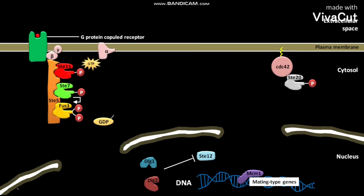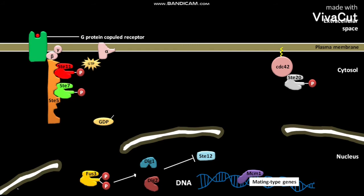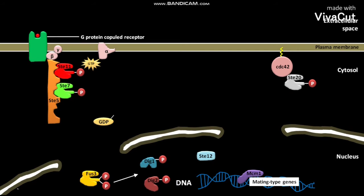The phosphorylated and activated ST7 then phosphorylates and activates Phos3. The phosphorylated and activated Phos3 then translocates into the nucleus, where it phosphorylates and activates proteins like DIG1 and DIG2. These phosphorylated proteins withdraw the inhibition of transcription factor ST12, allowing ST12 to bind to DNA and initiate transcription of mating type genes.